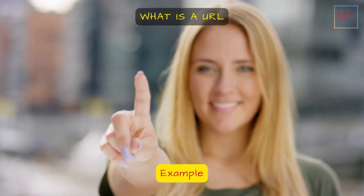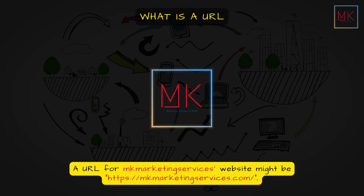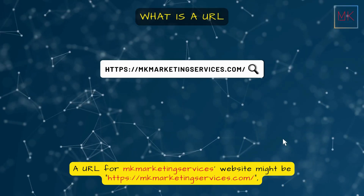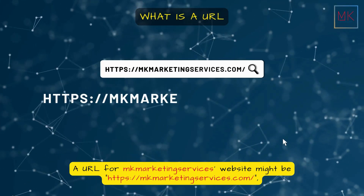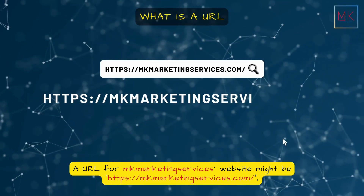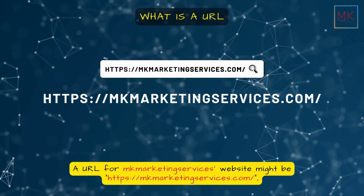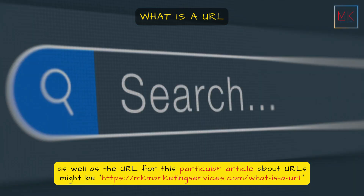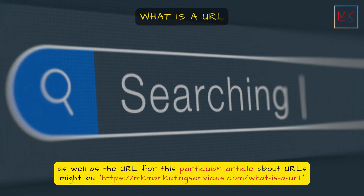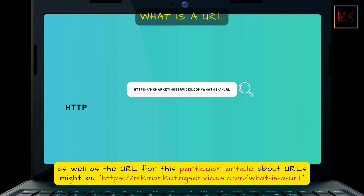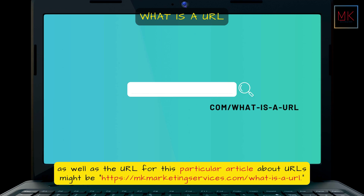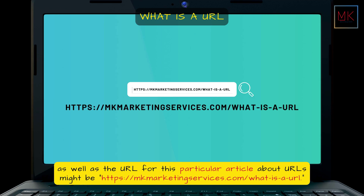Example: A URL for MK Marketing Services' website might be https://MKMarketingServices.com/, as well as the URL for this particular article about URLs might be https://MKMarketingServices.com/what-is-a-URL.